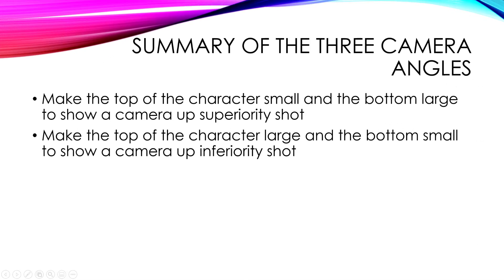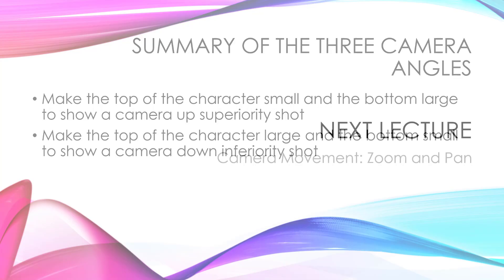Here's a summary of the three camera angles. Make the top of the character small and the bottom large to show a camera-up superiority shot. Make the top of the character large and the bottom small — this will also make the face and head look big and doughy-eyed. Notice how babies' heads are large and so are their eyes; it makes them look cute and vulnerable. So make the top large and the bottom small to show a camera-down inferiority shot.